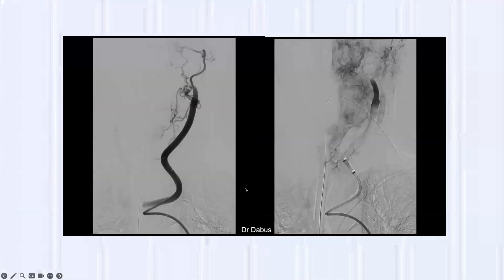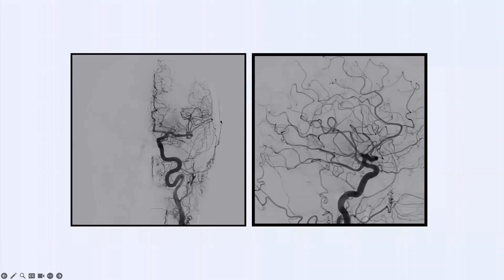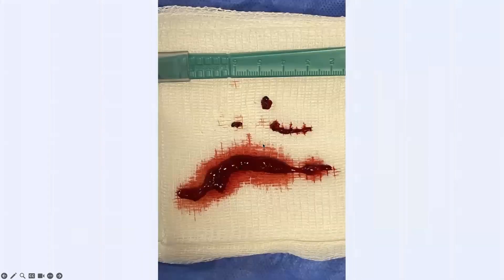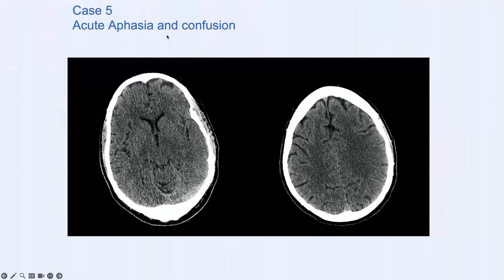At angiography, the left ICA occlusion is opened, all clot is removed, and an excellent result is achieved — the ICA open, the near-fetal left PCA open, and the anterior choroidal artery open. This patient had an NIH Stroke Scale of zero at 24 hours and a totally normal brain CT.